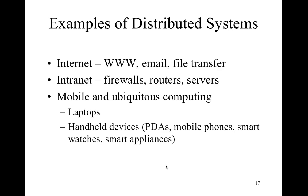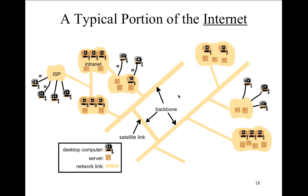Examples of distributed systems: the internet — email, file transfer, the web, firewalls, routers, servers — the intranet is also a distributed system. Mobile and ubiquitous computing, peer-to-peer file-sharing applications where each peer holds something another peer gets — information distributed among peers. Handheld devices, mobile phones, smartphones, smart appliances — everything connected together.